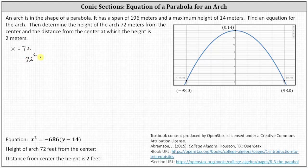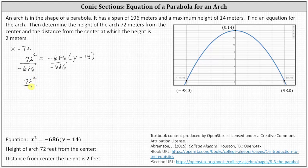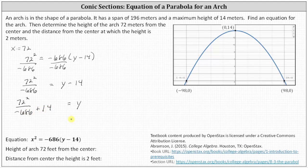This gives us 72² = −686(y − 14). Dividing both sides by −686, we get 72² ÷ (−686) = y − 14. Adding 14 to both sides, y = 72² ÷ (−686) + 14, which gives us y ≈ 6.44 meters.